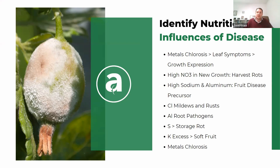There's a whole lot to understanding disease vectors as they're expressed and influenced by nutrient imbalances. A few key patterns we've seen: if potassium is excessive, you often get soft fruit; if sulfur is excessive, that leads to storage drop. There's a lot of literature on the correlation between aluminum levels and root pathogens, and lesser-known research on how chloride is associated with high levels of mildews and rusts, in both high-dollar-value crops and large-acre crops.